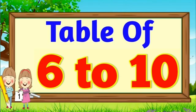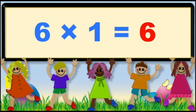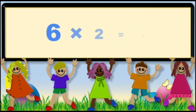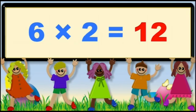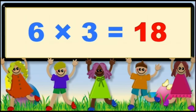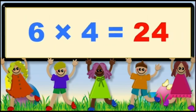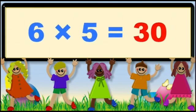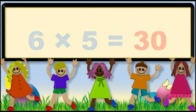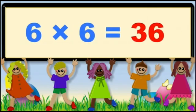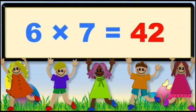Let's get started. Table of 6. 6 1s are 6. 6 2s are 12. 6 3s are 18. 6 4s are 24. 6 5s are 30. 6 6s are 36. 6 7s are 42.